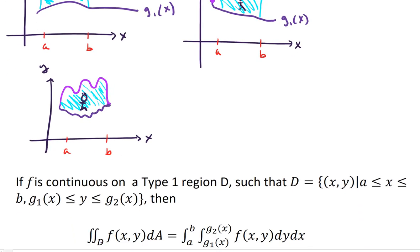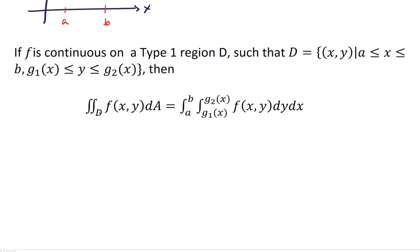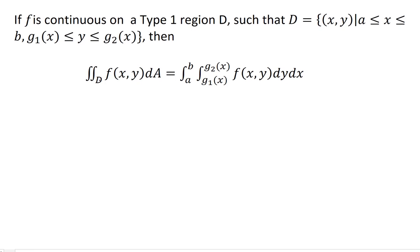So if we have a type 1 region, we have a method for computing the integral over D. If F is a continuous function on a type 1 region D, such that D equals the set containing points (X, Y) such that A is less than or equal to X is less than or equal to B, and G sub 1 of X is less than or equal to Y...